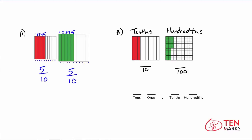On the left, you have 1, 2, 3 tenths filled in - so this is the fraction 3 tenths. Over here on the hundredths side, you'll see that there are 25 hundredths shaded in green. Now we want to write these fractions as decimals. 3 over 10 is the fraction 3 tenths, and in the place value chart, 3 tenths would be 0.3, because we have 3 tenths and 0 ones, 0 tens, and 0 hundredths. For the green model, if we have 25 hundredths, we write this by putting the last digit in the hundredths place, 2 in the tenths place, and 0 in the ones place. So this number is 0.25.